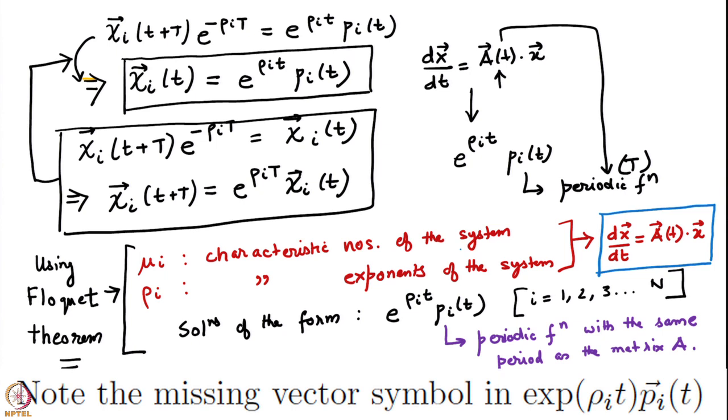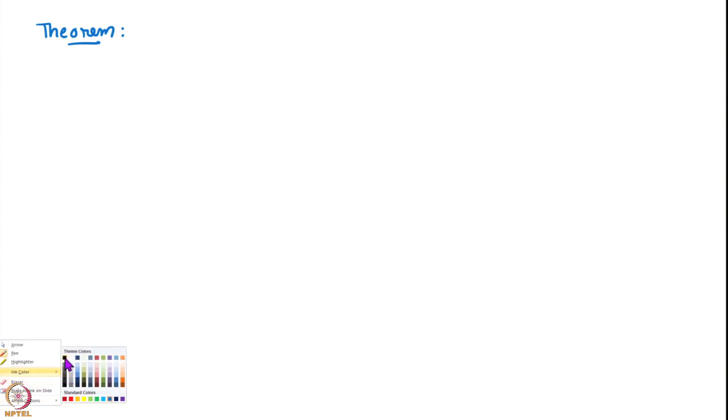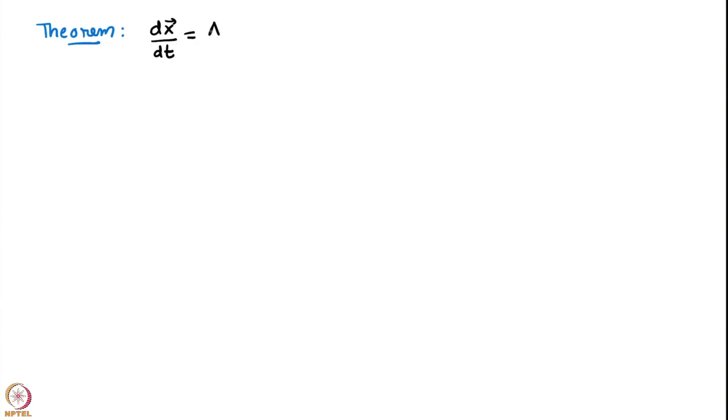Now let us apply this to the Mathieu equation. Before we do this, there is one more theorem that is necessary — I will state it without proof, though it is not very difficult to prove and can be done in a few lines. This theorem will be used to make qualitative conclusions about the solutions to the Mathieu equation. It is a statement about the characteristic numbers of the system A(t)x, where A is a periodic n×n matrix.